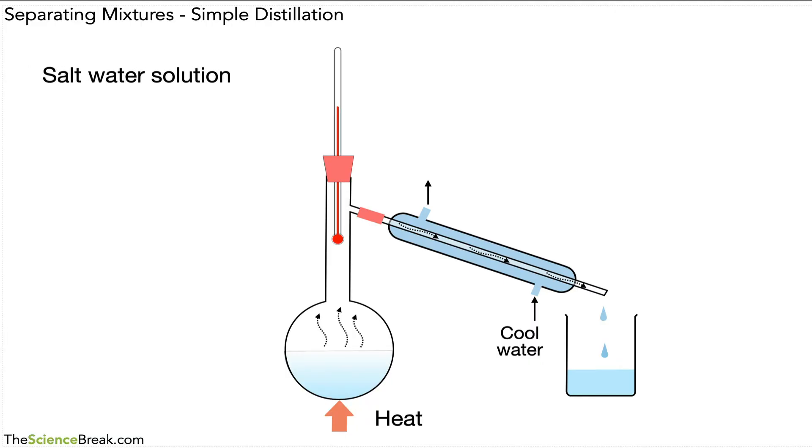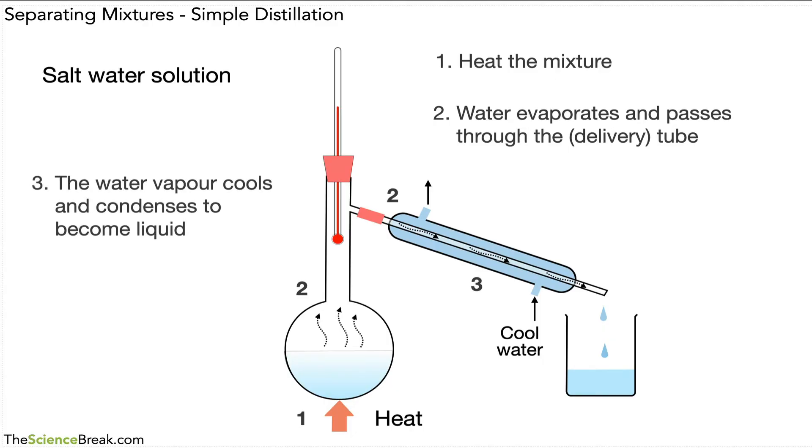The method is pretty much the same. First, we'll heat the mixture to allow the water to evaporate. The water evaporates and passes through the delivery tube. The water vapor will cool and condense to become a liquid, and we would then have salt left in the flask. This is the same method, just separating out a slightly different mixture.